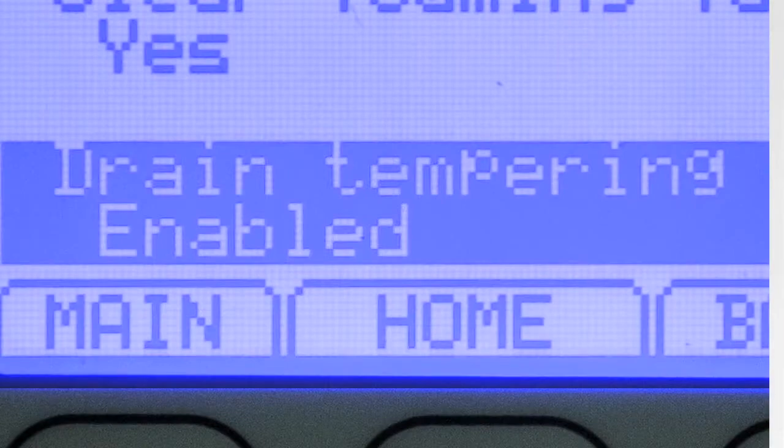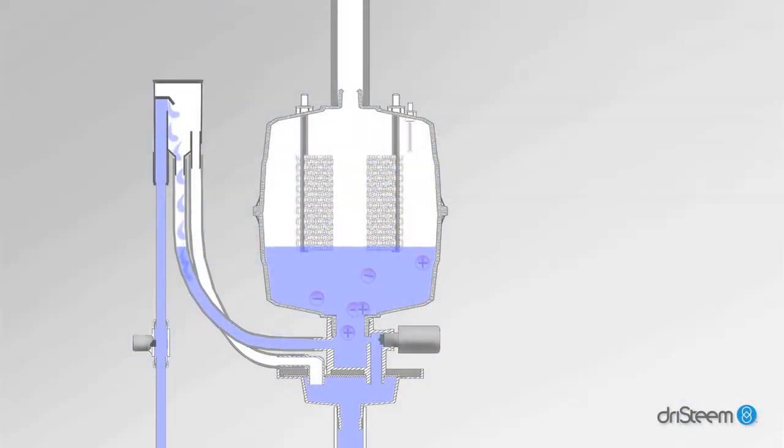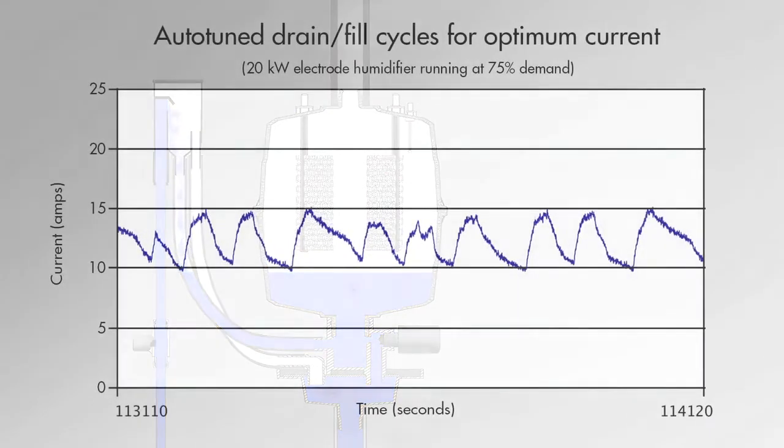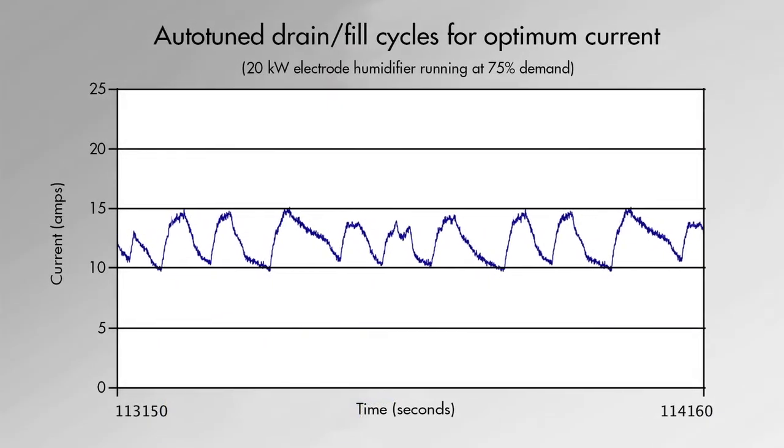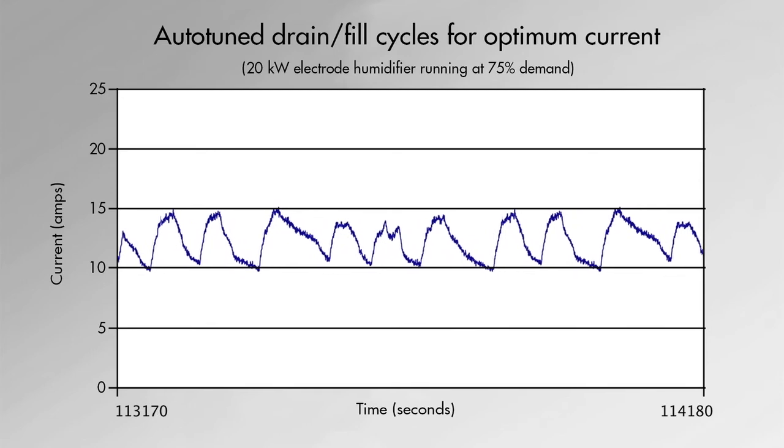Dry steam electrode humidifiers can cool their own drain water by opening the fill and drain valve simultaneously, and a proprietary controller algorithm monitors water conductivity and automatically tunes drain and fill cycles to keep electrical current within optimum parameters.